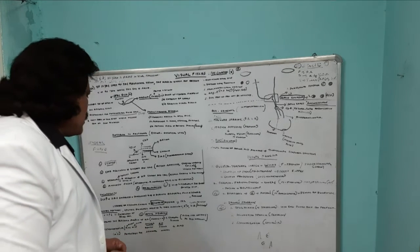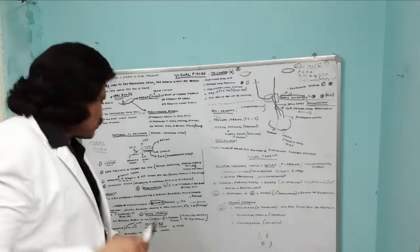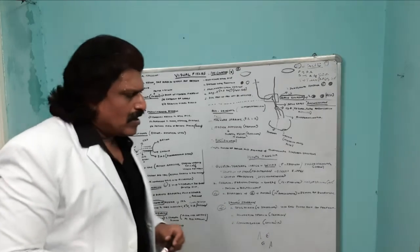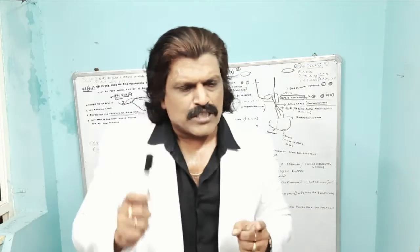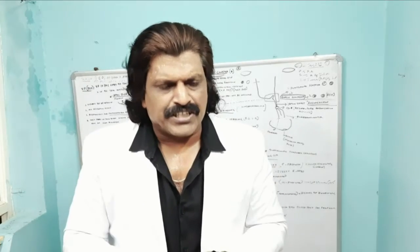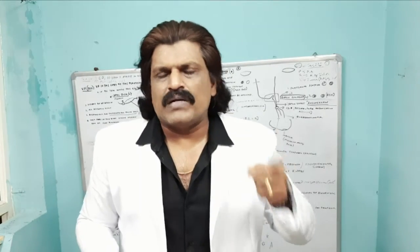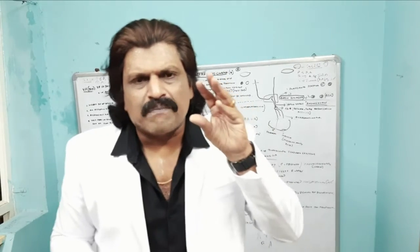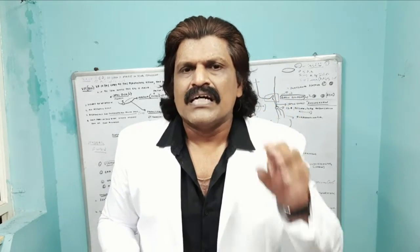In optic neuritis, patients usually have central scotomas. The optic nerve is basically concerned with color, and therefore when there is optic neuropathy or the optic nerve gets affected, color perception is gone — this is called chromatopsia.